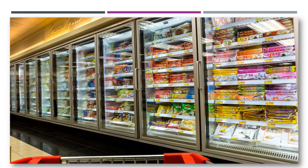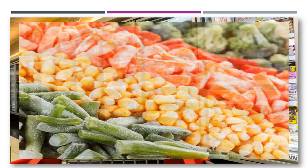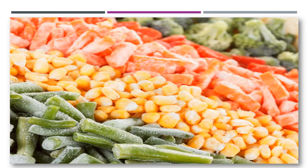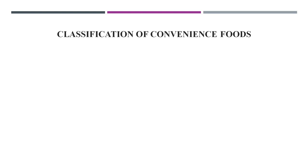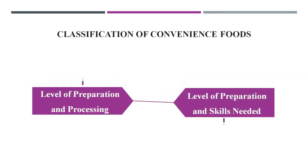Convenience foods are commercially prepared foods for ease of consumption. There are two classifications of convenience foods: one is based on level of preparation and processing, and another one is based on level of preparation and skills needed.